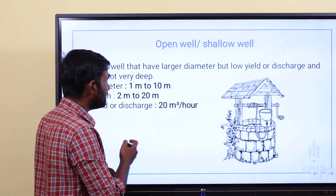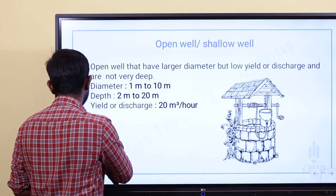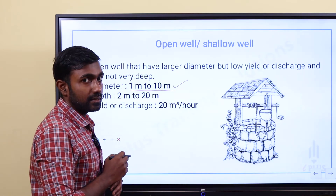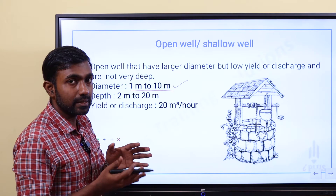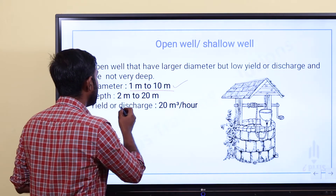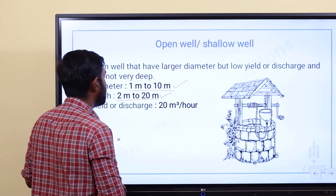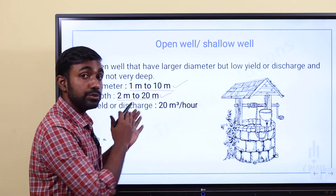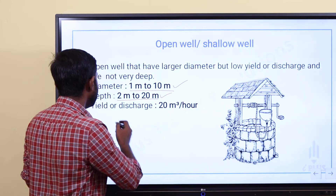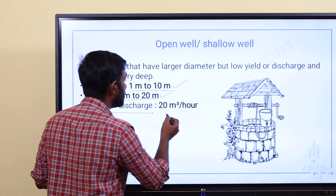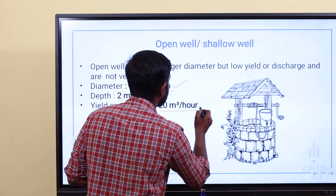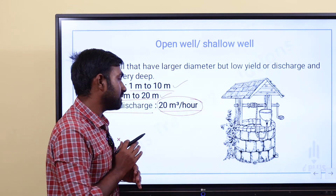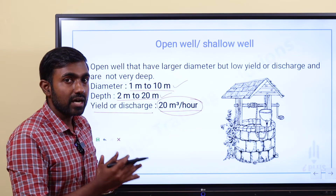The diameter of a dug well is around 1 meter to 10 meters. The depth is 2 to 20 meters. These open wells have large diameter but low yield or discharge — around 20 m³ per hour. Low discharge type of category is 20 m³ per hour.